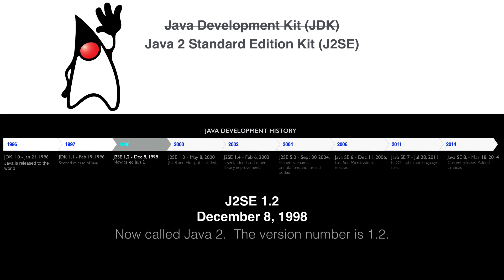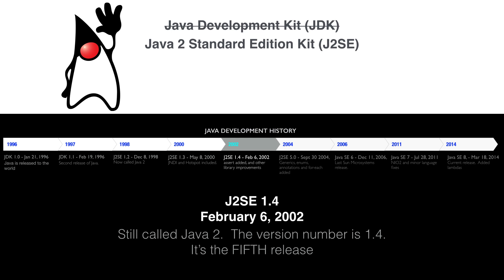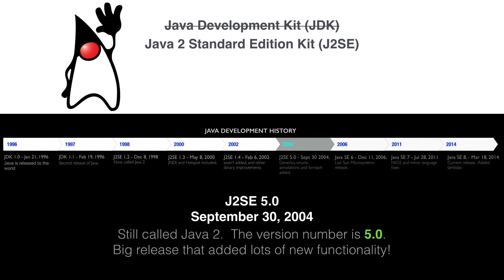They changed the name — it was now known as the Java 2 Standard Edition. Later releases were also Java 2, even though it was really the third and fourth, depending on how you looked at it. The release numbers were 1.3 and 1.4. Then came 5 — it was still Java 2 Standard Edition, but this version was 5.0. They added a ton of new functionality. Just in case you were paying attention, they still reported it as version 1.5. The 5.0 was a marketing thing — they just called it Java 5.